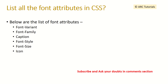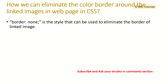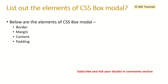How can we eliminate the color border around linked images in a web page using CSS? When you put an image, by default a blue color border appears. To remove that, we use the code 'border: none' in your CSS.